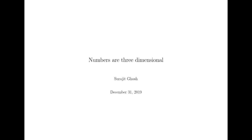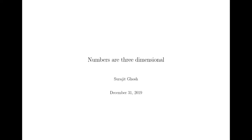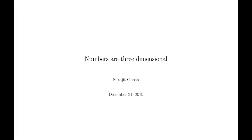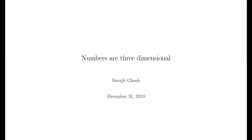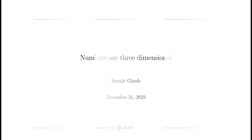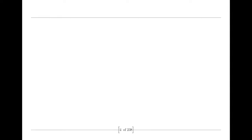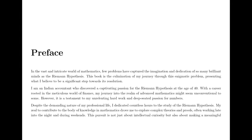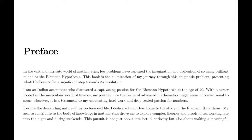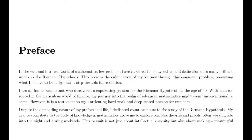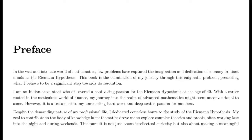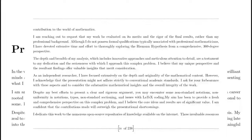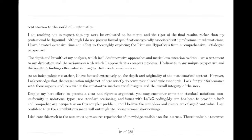Once upon a time, in the heart of the 18th century, a brilliant mathematician named Leonard Euler ventured into the mysterious world of numbers. Euler was captivated by the idea of understanding the distribution of prime numbers, those elusive building blocks of arithmetic. In his exploration, he stumbled upon a peculiar series — the infinite sum of the reciprocals of the natural numbers raised to a power. This was the dawn of what would later be known as the Riemann zeta function.